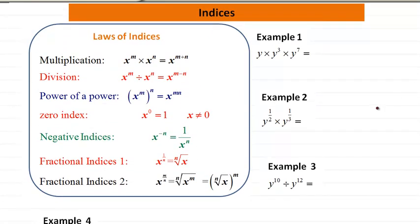So we start from example 1. Because we are multiplying these terms, we use the multiplication rule. Basically we add the powers. So we have 1 plus 3 plus 7. The answer is y to the power 11.